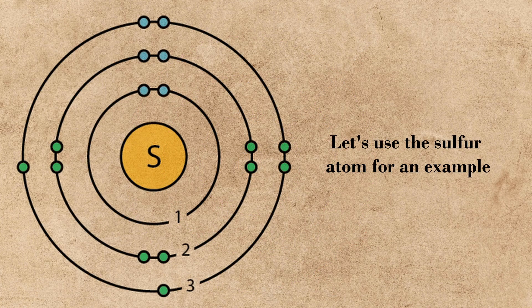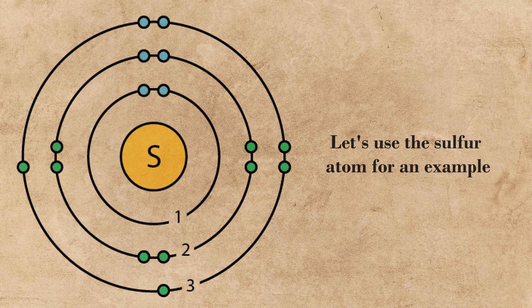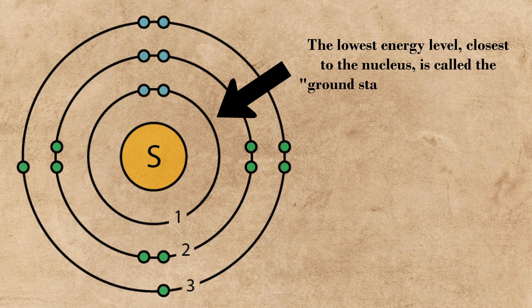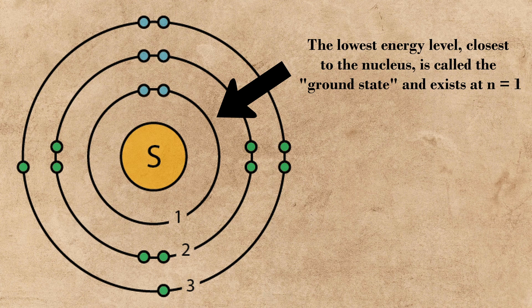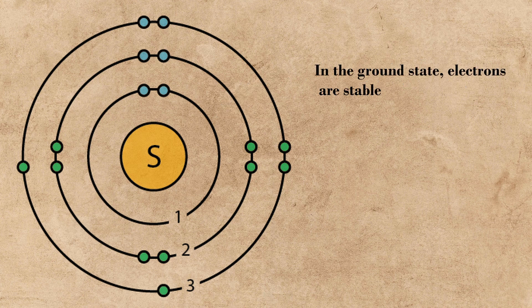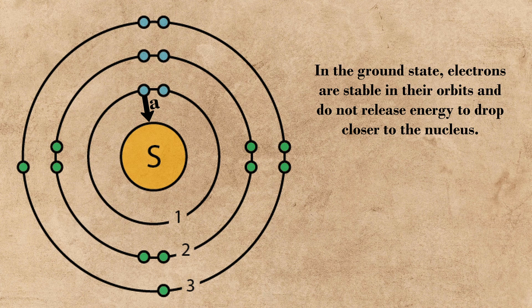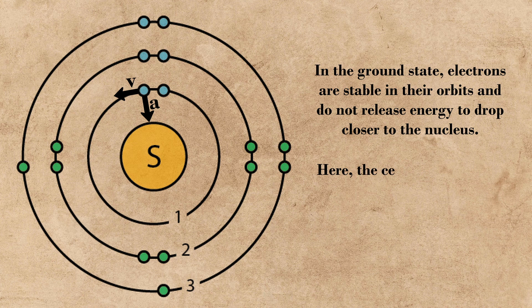This model proposed by Bohr did two major things. For one, it solved Rutherford's problem of electrons falling into the nucleus by proposing a ground state of n equals one in which an electron is in equilibrium in its orbit due to the attractive forces between the nucleus and the electron perfectly balancing with a linear force attributed to the direction of motion of the electron's orbit.